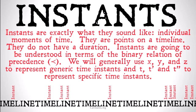We're generally going to use x, y, and z to represent generic time instances, and t, t prime, t double prime, and so on to represent specific time instances. We may change this around as we go forward to other variables, but generally x, y, and z are going to be generic time instances, and t and t prime are going to be specific ones.